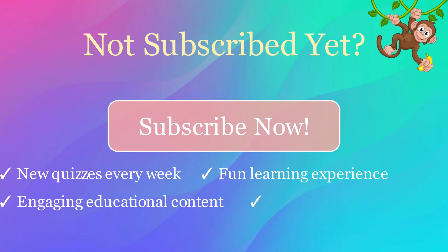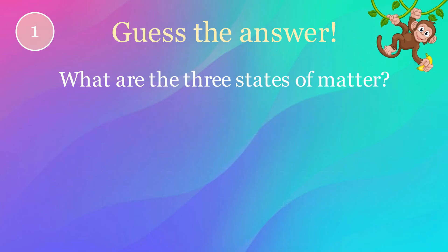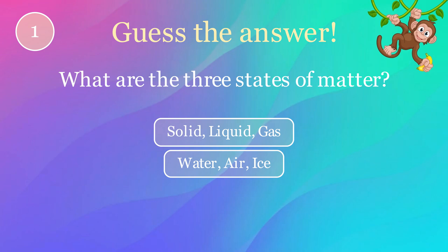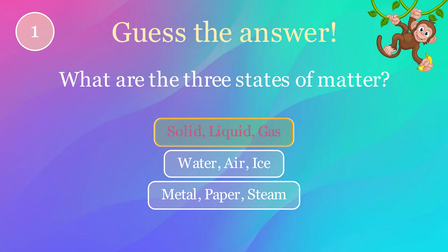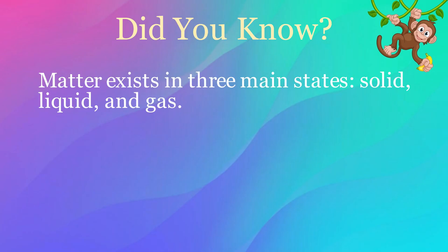Don't forget to hit the bell icon to stay updated with our latest uploads. What are the three states of matter? Options: solid, liquid, gas — water, air, ice — metal, paper, steam. The correct answer is solid, liquid, gas. Here's an interesting fact: matter exists in three main states — solid, liquid, and gas.